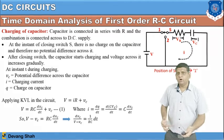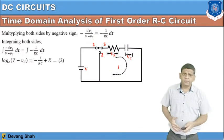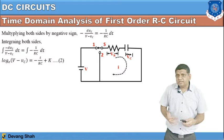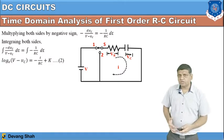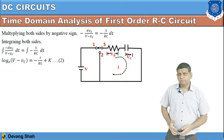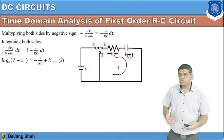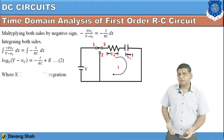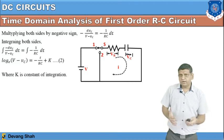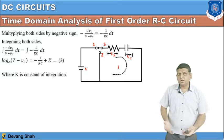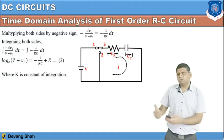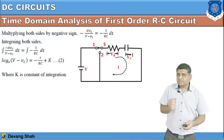Multiplying both sides by minus one and taking the integration: the integral of minus dVc divided by (V minus Vc) equals the integral of minus (1/RC)·dt. Solving this integration gives ln(V minus Vc) equals minus T divided by RC plus K, where K is the integration constant. Our first job is to find K, which represents the initial condition when the switch is connected to position one.